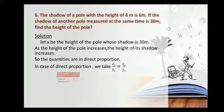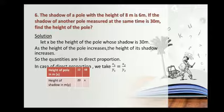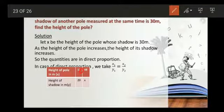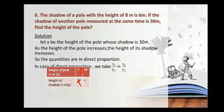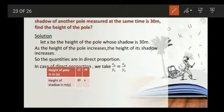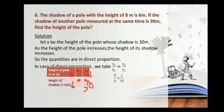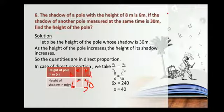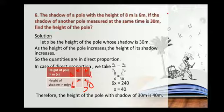Take the height of the pole as X and height of the shadow as Y. When the pole is 8 metres, the shadow is 6 metres; X is the unknown height when shadow is 30 metres. Substituting: 8 by 6 is equal to X by 30. Cross multiplying: 6X is equal to 8 into 30, which is 240. X is equal to 240 by 6, which gives 40. So the height of the pole whose shadow is 30 metres is 40 metres.